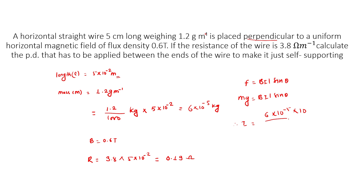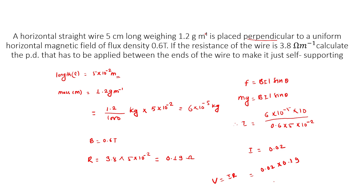Therefore I equals Mg divided by BL, which gives 6 into 10 to the power minus 5 into 10 divided by 0.6 into 5 into 10 to the power minus 2, so I equals 0.02 A. Then V equals IR equals 0.02 into 0.19.